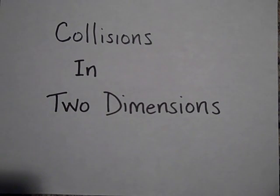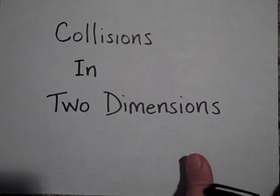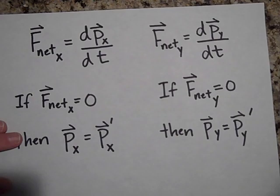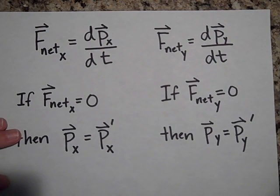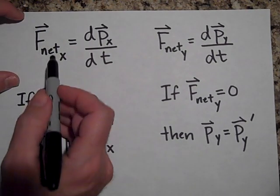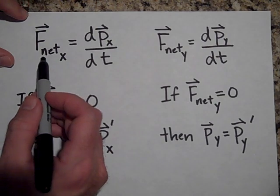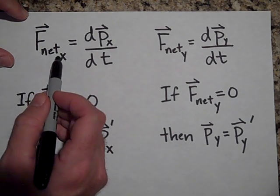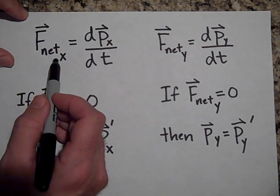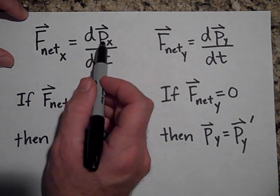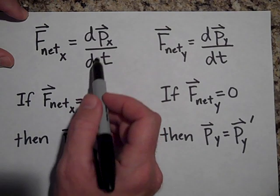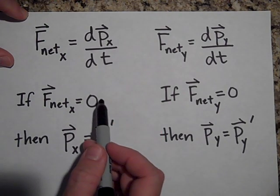We're going to talk today about collisions in two dimensions and how you handle that. This is Newton's second law, saying that the net force in the x-direction is equal to the rate at which the momentum changes in the x-direction.